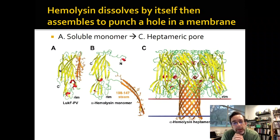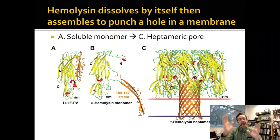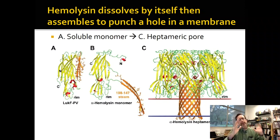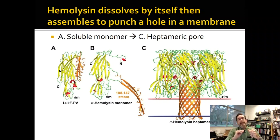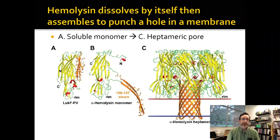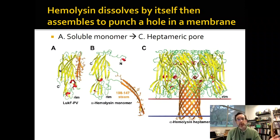How does hemolysin punch a hole in the membrane? It's a toxin that floats through your blood and goes to red blood cells. It has a beta sheet that is folded up in the soluble monomer configuration. But when seven of them — it's heptameric — get together at a membrane, that beta sheet part flips down and forms a beta barrel together with the other six subunits, punching all the way through the membrane. This is a remarkable physical mechanism: a soluble protein that can punch a hole in the membrane by having this folding beta sheet component.